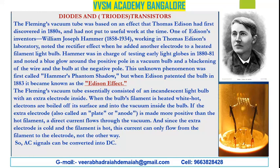The Fleming vacuum tube was based on the Edison effect, which Thomas Alva Edison discovered in the 1880s but had not put to useful work at that time. One of Edison's inventors, William Joseph Hammer, 1850 to 1934, working in Thomas Edison's laboratory, noted a rectifier effect when he added another electrode to a heated filament light bulb. Hammer was in charge of testing early light bulbs in 1880 to 1881, and noted a blue glow around the positive pole in a vacuum bulb and a blackening of the wire at the negative pole. This unknown phenomenon was first called 'Hammer's phantom shadow.'